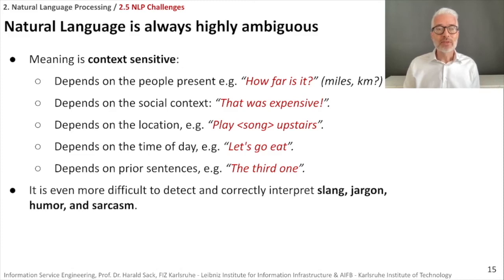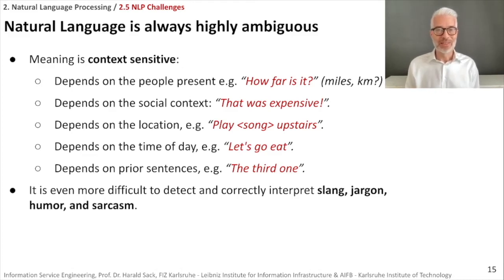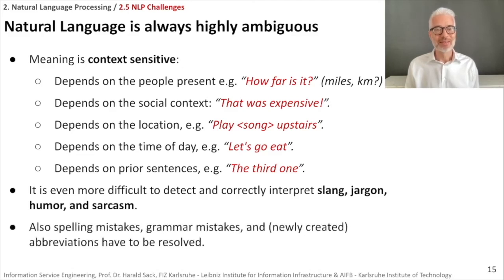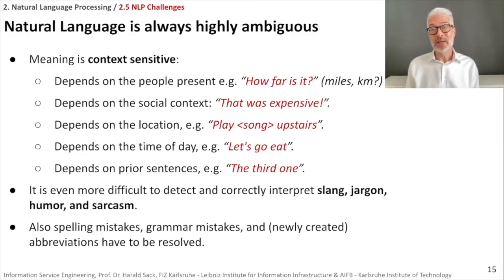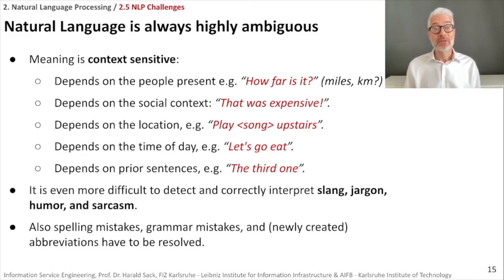Additionally, things are even more difficult when dealing with slang, jargon, humor, or sarcasm. Sarcasm detection is really the high art of natural language processing. People also make spelling mistakes, grammar mistakes, create new words and abbreviations — all of this has to be resolved. Understanding language depends on syntax, semantics, context, and also the pragmatics of the speaker, especially for humor or sarcasm.